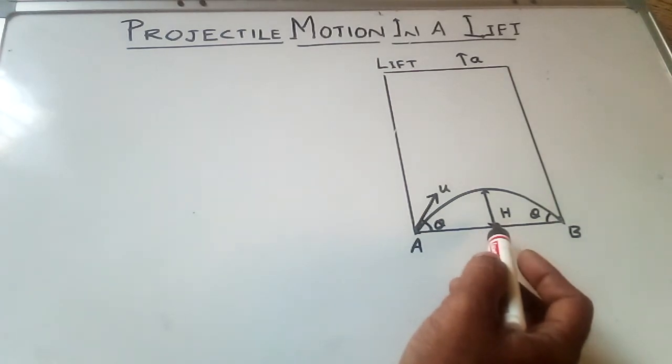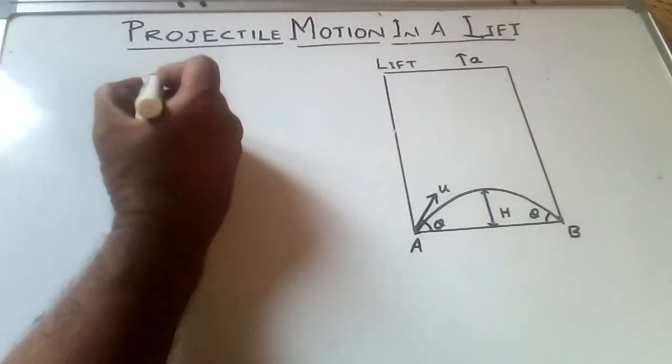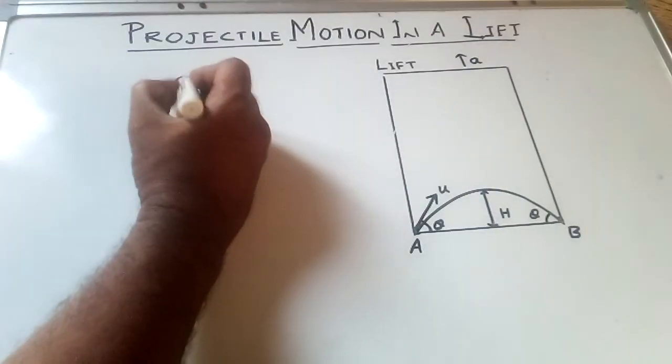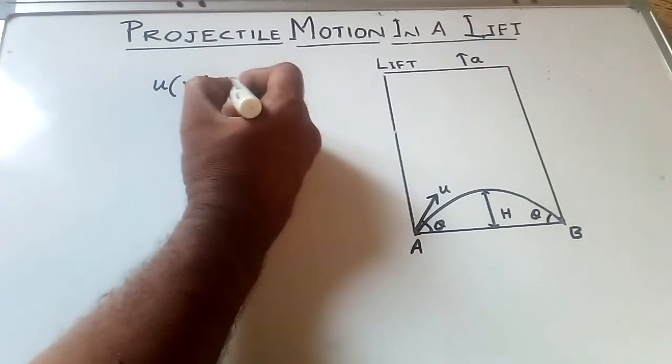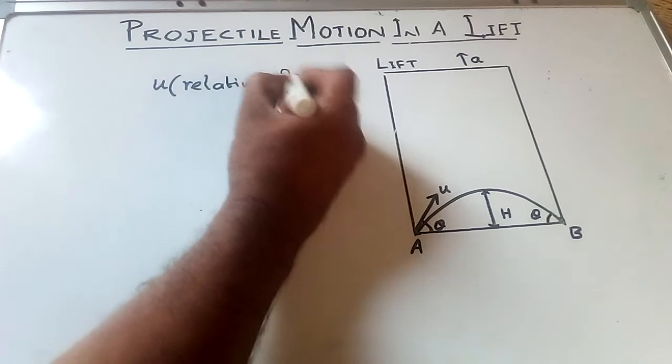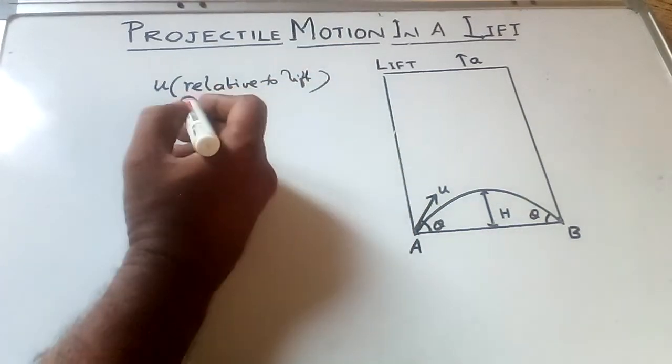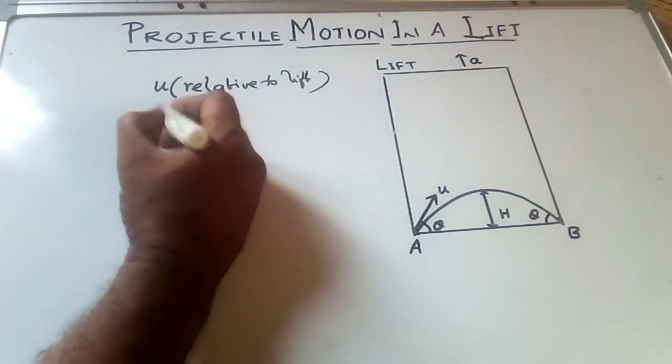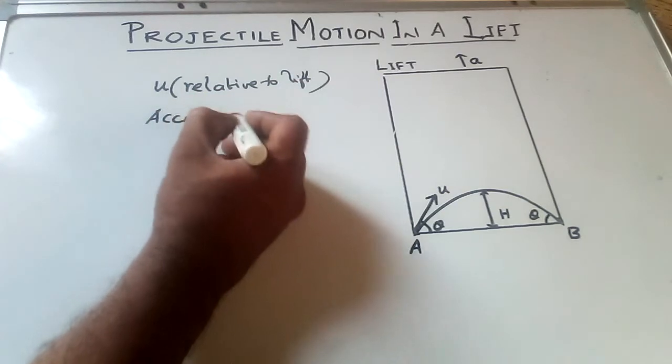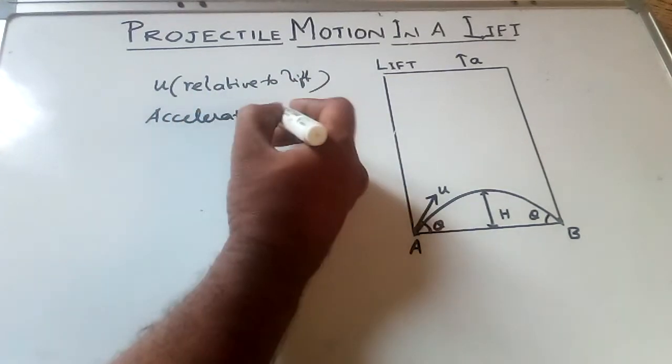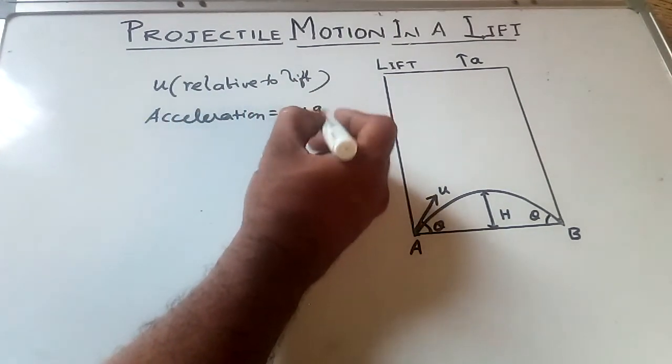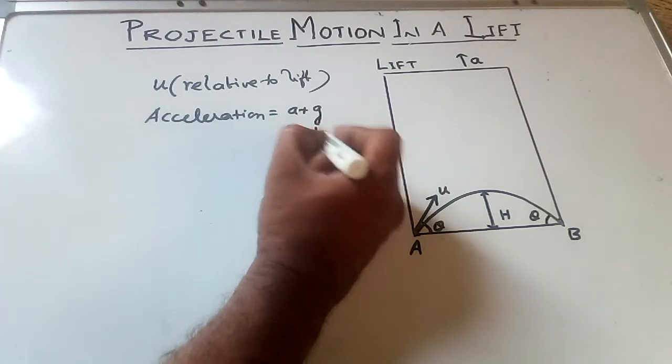So the initial velocity is equal to U, that is relative to lift. And the acceleration is equal to A plus G, that is also relative to lift.